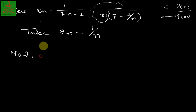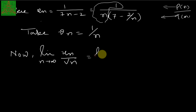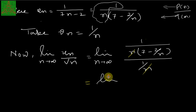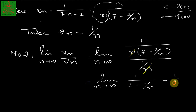We check the limit of u_n / v_n as n → ∞. We get limit of [1/(n(7 − 2/n))] / [1/n] = limit of 1/(7 − 2/n) as n → ∞. As n → ∞, 1/n → 0, so this gives 1/7, which is a finite non-zero number.